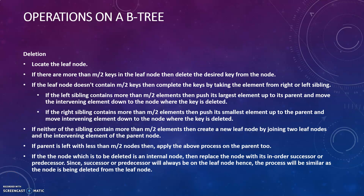We are going to learn the deletion of a node from a B-tree. We have to follow different procedures for this. First, locate the leaf node. If there are more than M/2 keys in the leaf node, then we have to delete the desired key from the node. That means if there are a sufficient number of keys as per the B-tree principle, you can directly delete the key.